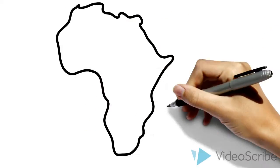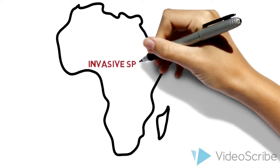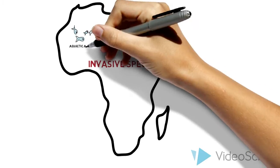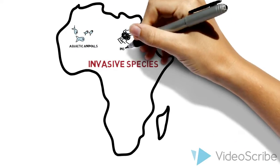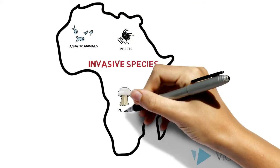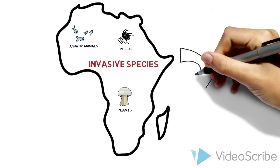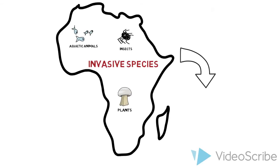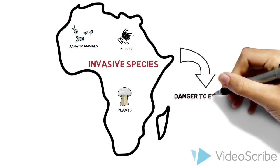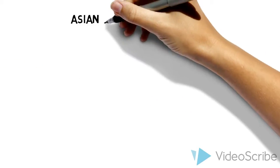Since early European exploration, invasive species have come to be a major environmental concern in Canada, ranging from aquatic animals to insects to plants. Invasive species serve as a danger to our marine and terrain-based ecosystems.